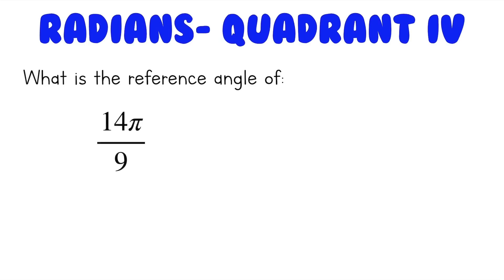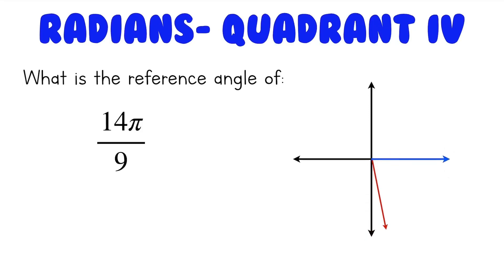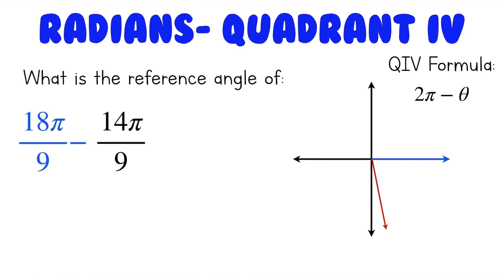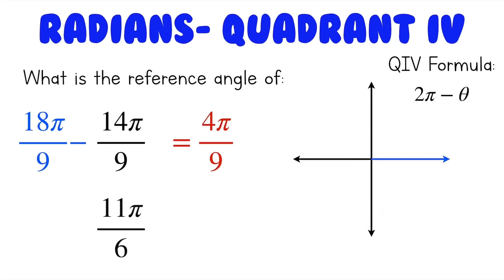Last but not least, radians in quadrant 4. What is the reference angle of 14 pi over 9? Since this angle is in the fourth quadrant, it makes an angle with the positive x-axis. To find the reference angle, we do 2 pi minus the angle. 2 pi is 18 pi over 9, so 18 pi over 9 minus 14 pi over 9 gives us 4 pi over 9. And what about 11 pi over 6? 2 pi is 12 pi over 6 minus 11 pi over 6 gives us a reference angle of pi over 6.